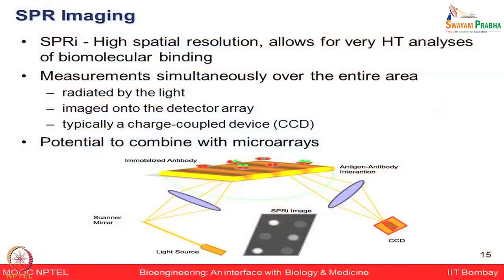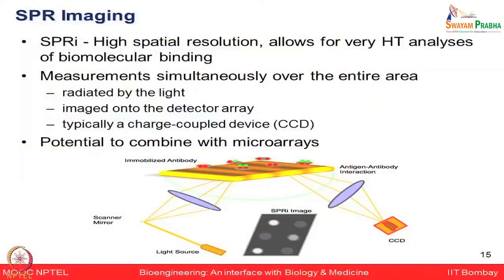Currently available SPR platforms can maximally use about 4 channels or 4 interactions to study simultaneously, whereas biological problems often require studying hundreds if not thousands of such phenomena at once. SPR imaging is a new platform that combines the power of both SPR and microarray-based platforms, allowing high spatial resolution for high-throughput analysis of biomolecular binding. Rather than measuring a very specialized localized area as in standard SPR, the whole chip surface is irradiated by light, imaged onto detector arrays, and linked to a CCD device to capture the whole image. This platform has shown great potential in combination with microarrays.